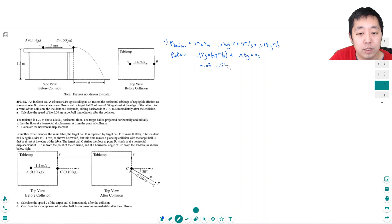Since I know this has to equal 0.14, I can solve for vB. This is negative 0.07 plus 0.5 vB equals 0.14. So 0.5 vB equals 0.21.